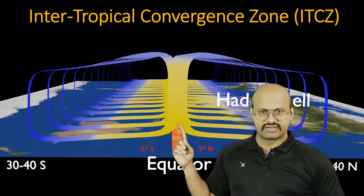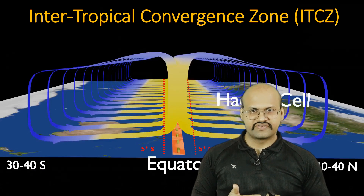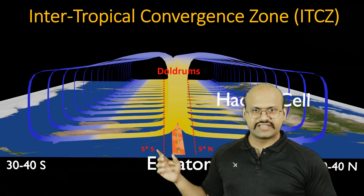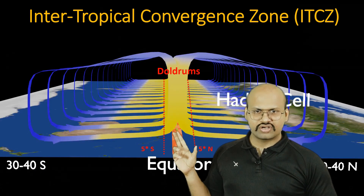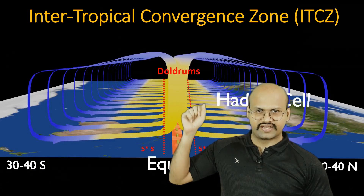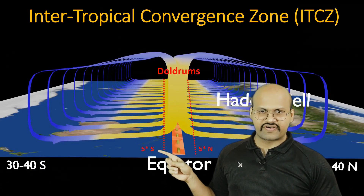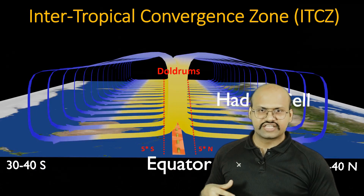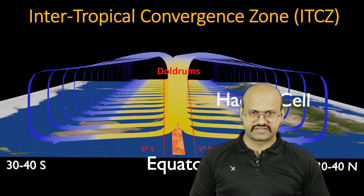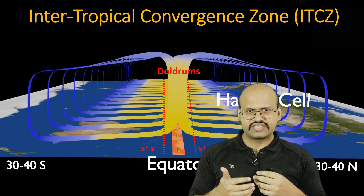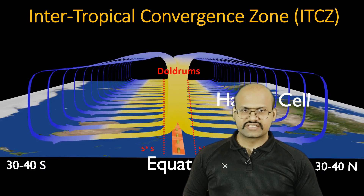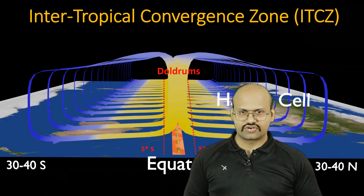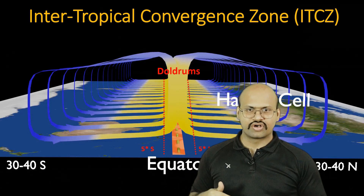The region in the middle is called the Intertropical Convergence Zone (ITCZ), where winds from both hemispheres come and converge. Because these winds are moving vertically upward in this region — from 5 degrees north to 5 degrees south — there is not much wind at the surface. The winds flow very slowly here, and that is why this region is called the Doldrums. Ships find it very difficult to navigate in this region due to the lack of winds.